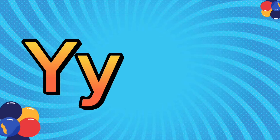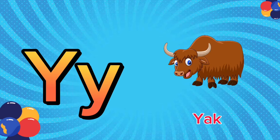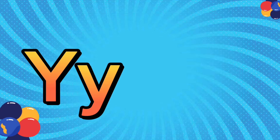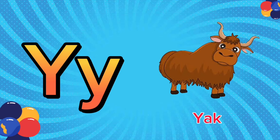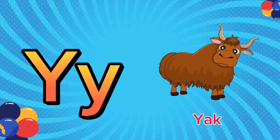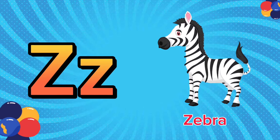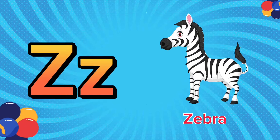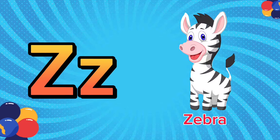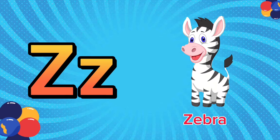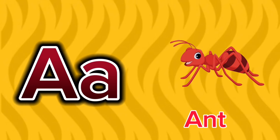Y is for Yak. Y, Y. Yak, Y is for Yak. Y, Y. Z is for Zebra. Z, Z. Zebra, Z is for Zebra. Z, Z, Z. A is for Ant.